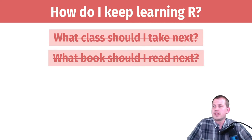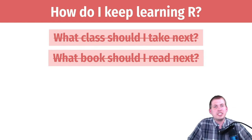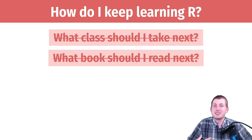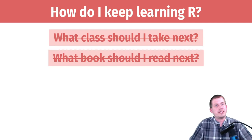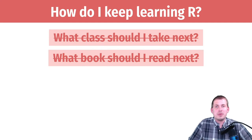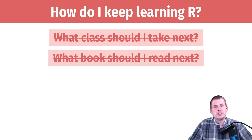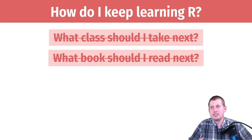Especially at GSU, if you're looking at the Andrew Young School, there aren't a lot of classes focused on R. In general, if you're doing a master's degree you're taking two or three classes a semester for two years and then you're done. If you're doing a PhD, you're taking two or three years of coursework and then you're finished. There just aren't a lot of classes designed purely for teaching you R.